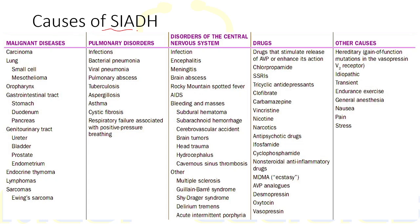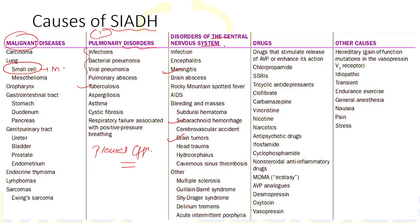The causes of SIADH are numerous. The most important and common are pulmonary disorders, including bacterial and viral pneumonia, pulmonary abscess, tuberculosis, and pleural effusion. Central nervous system disorders such as meningitis, subarachnoid hemorrhage, and brain tumors can also cause SIADH. Among malignant diseases, the most common tumor associated with SIADH is small cell carcinoma of the lung, responsible for 75% of malignancy-related SIADH; conversely, 10% of all small cell carcinoma cases are associated with SIADH.